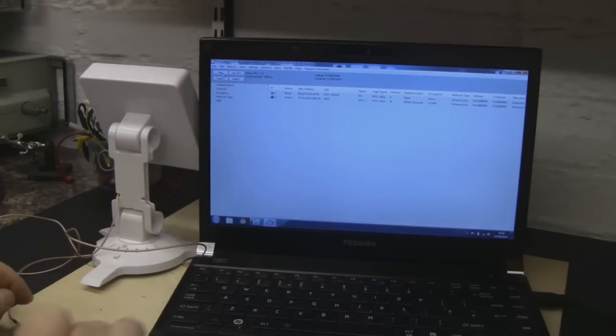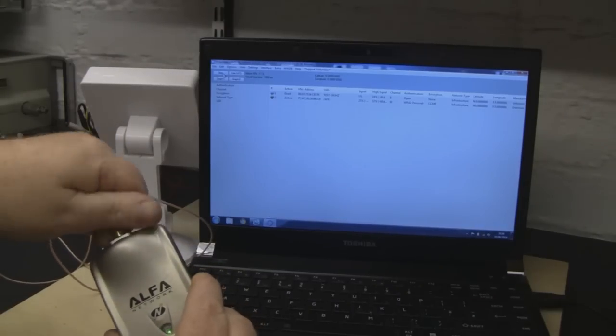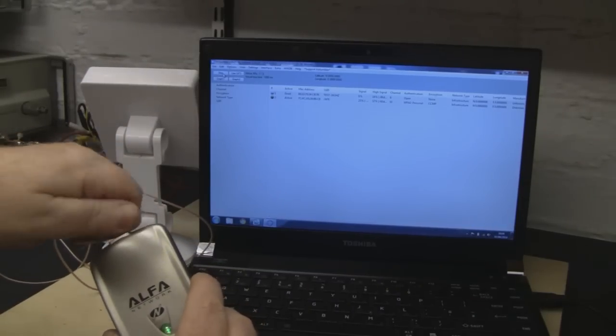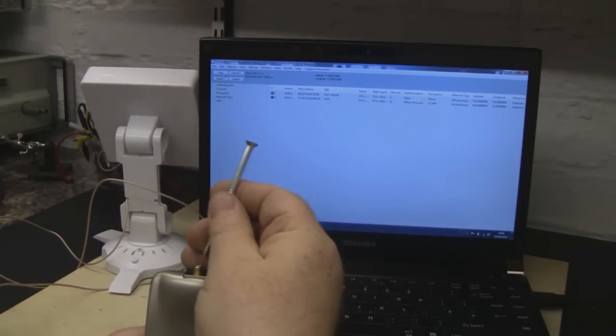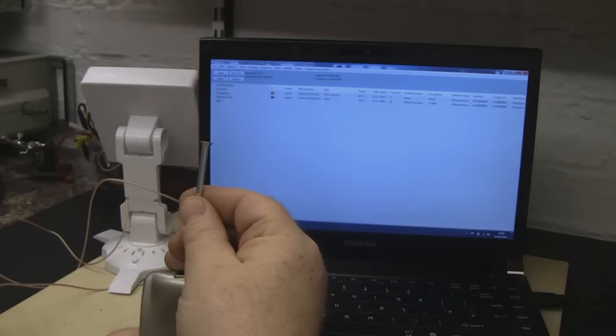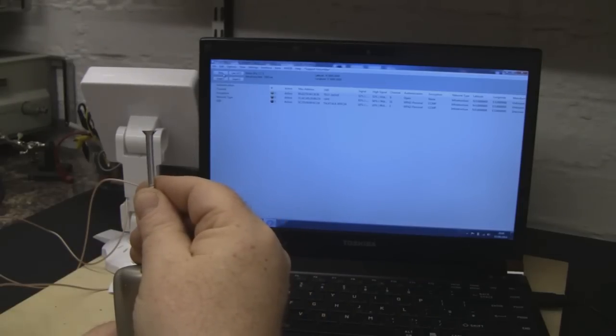Just to show you what a poor signal it is, I've actually just got a screw here. I'm going to unplug it from the alpha card and stick this screw on the end. So yeah, using just a screw stuck in the end of the alpha card is getting much better signal than that cheap Chinese antenna.